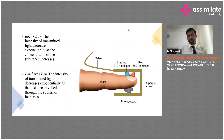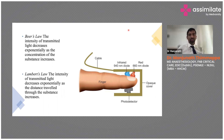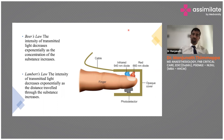Whenever you use any gadget, you should know the principle behind it — if you don't understand the principle, troubleshooting will be difficult. The pulse oximeter is based on Beer-Lambert's Law, which states that the intensity of transmitted light decreases exponentially as the concentration of the substance increases, and also decreases as the distance traveled through the substance increases.